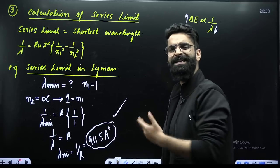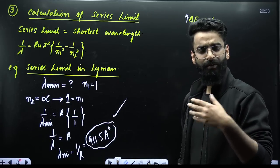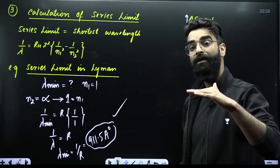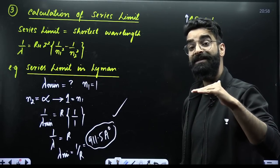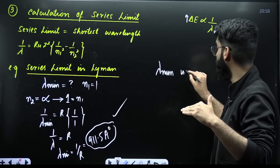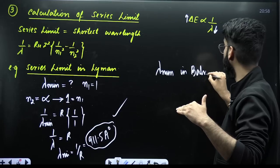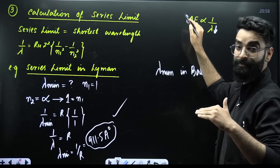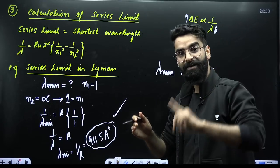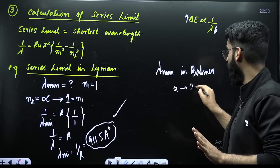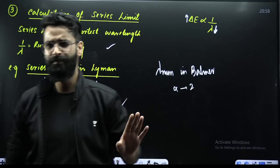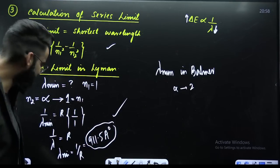Similarly, they can ask you the series limit of Balmer. In Balmer, the ground state is N = 2. Calculate the shortest wavelength in Balmer — let me know the answer of this question in the comments. λ_min in Balmer: for the wavelength to be minimum, the energy gap has to be maximum. In case of Balmer, the maximum energy gap is from infinity to two. Put this condition into the formula and get λ_min in case of Balmer. Again, one sure-shot question which will be asked in your examination.